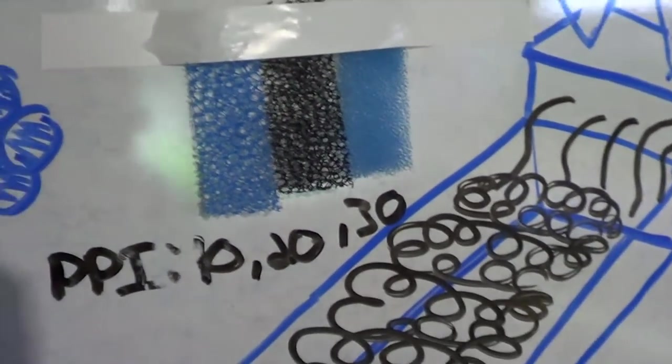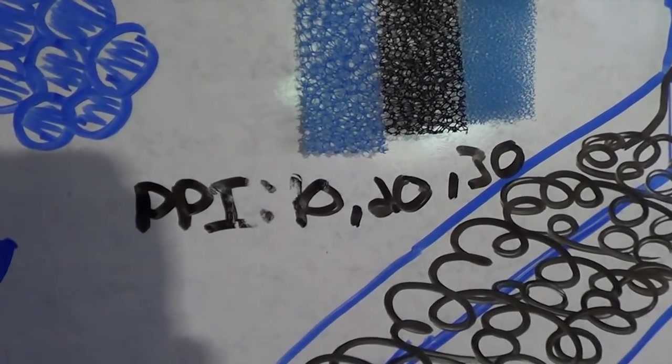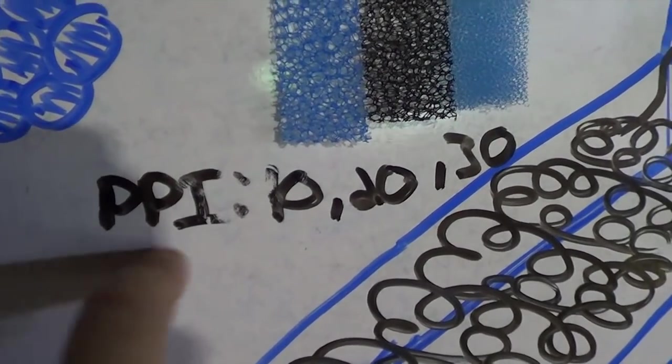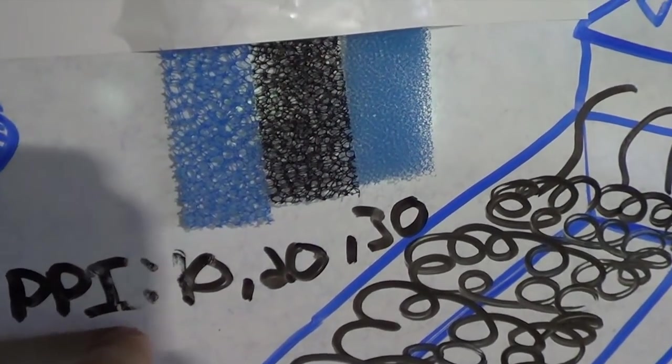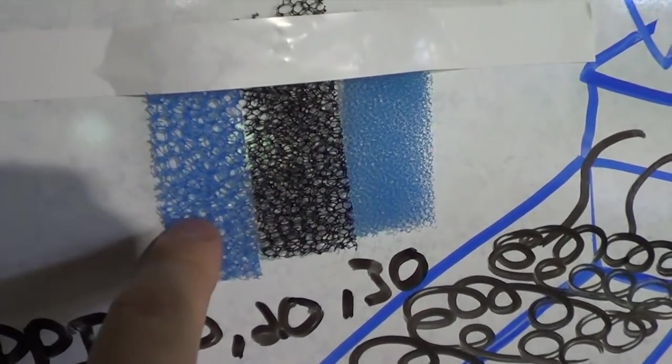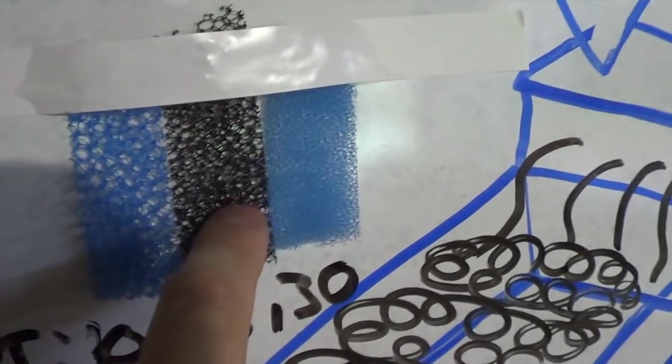Now, obviously, there are different size bubbles. That's what people refer to as PPI or pores per inch. Oftentimes it will go from 10 pores per inch, which is this, 20, 30. It can go all the way up to 100.